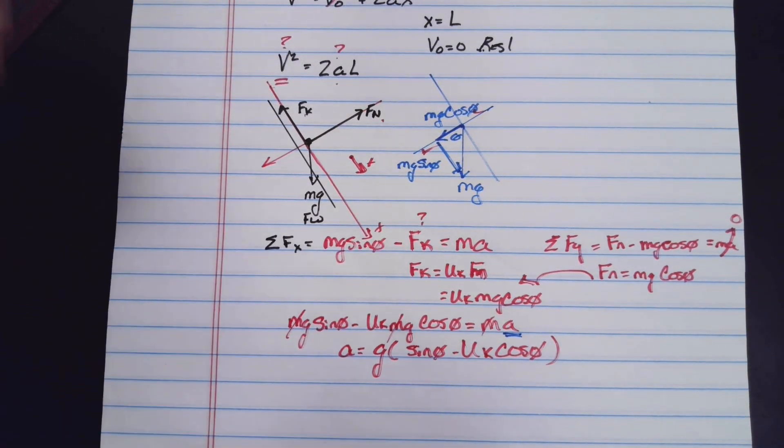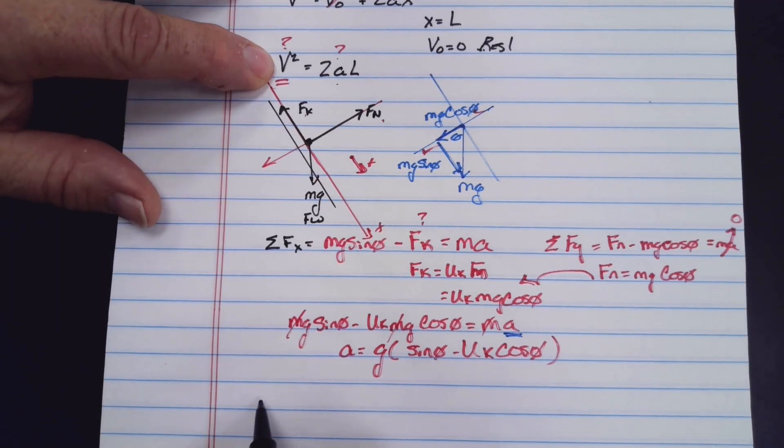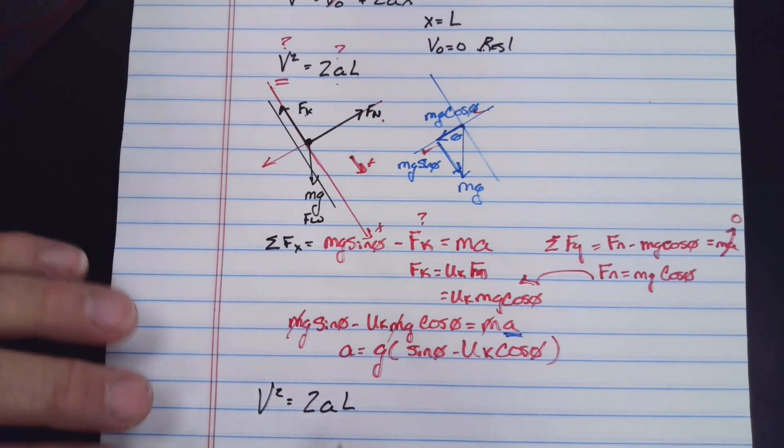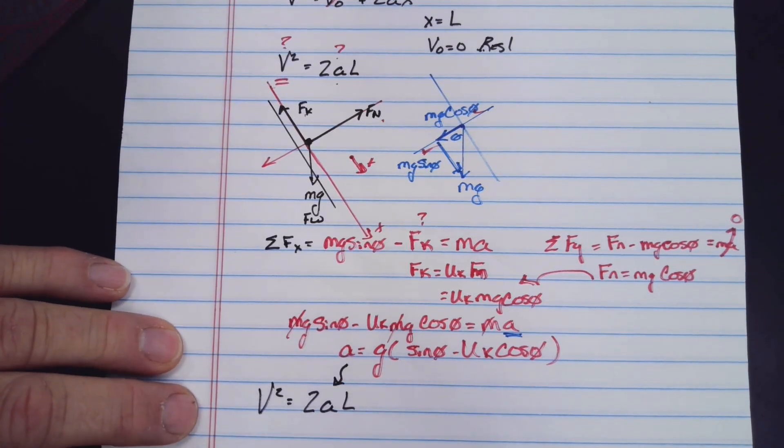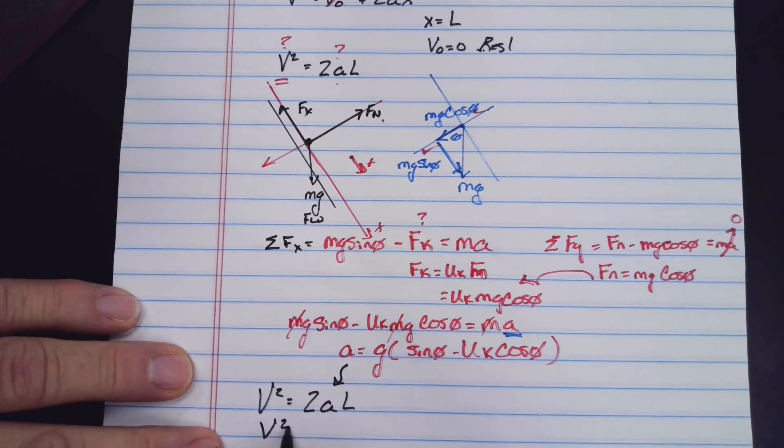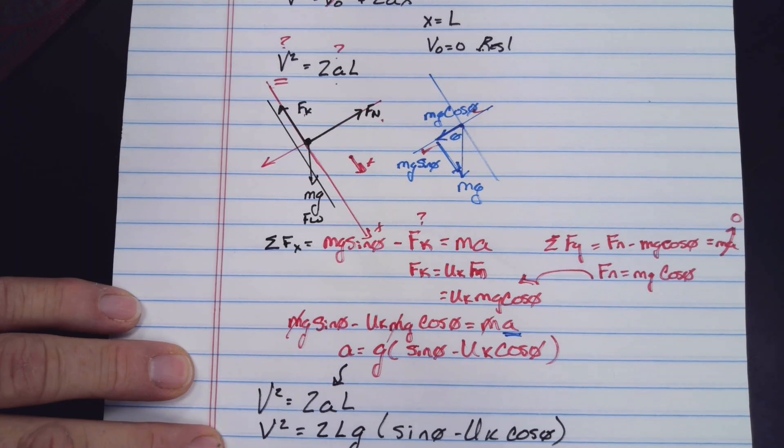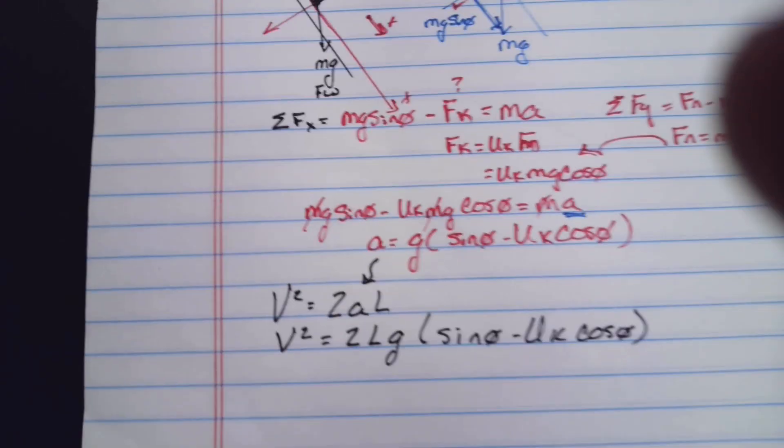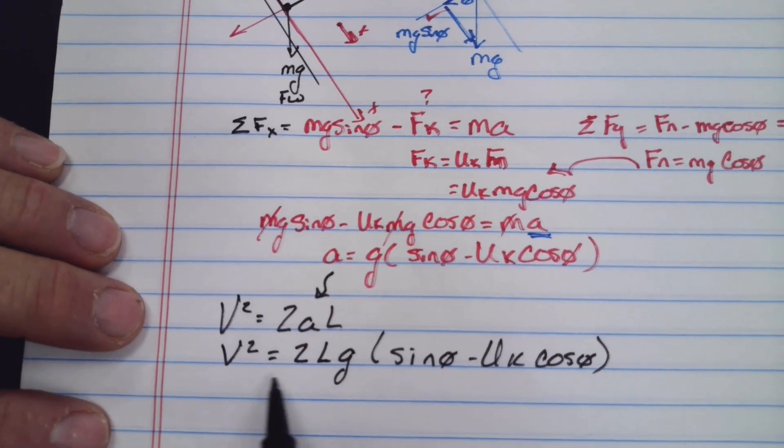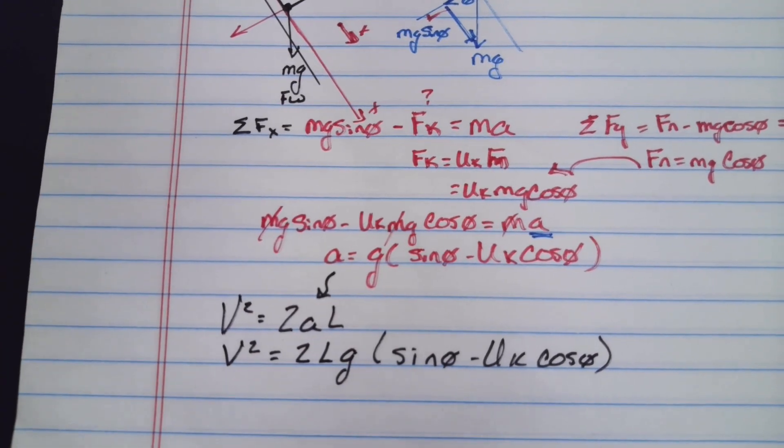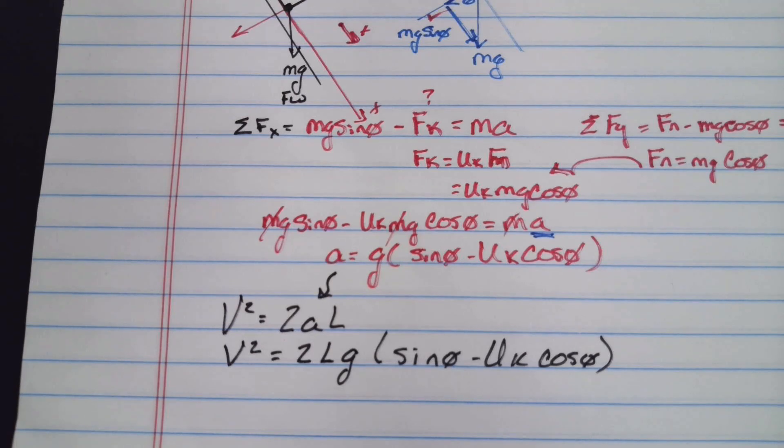Our equation now looks rather large. Remember what we're looking for is acceleration. If we rewrite that, we can get rid of masses since mass is in all of them. This breaks down if I do the algebra into a = g(sinθ - μk cosθ).